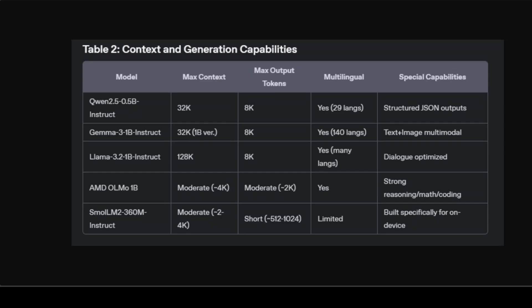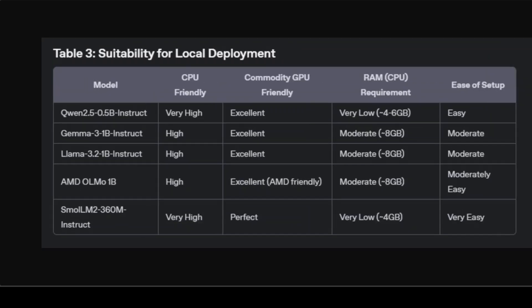Keeping these capabilities in perspective makes it easier to select the right model. Looking at suitability for local deployment: AMD OLMo is particularly attractive if you are already using AMD hardware, as it is optimized for such platforms, potentially greatly improving performance and efficiency. SmallLM2 and Qwen offer the lowest hardware requirements, ideal even for older laptops or embedded devices. Gemma and Llama require moderate systems but comfortably operate on standard consumer-grade GPUs and desktop CPUs.